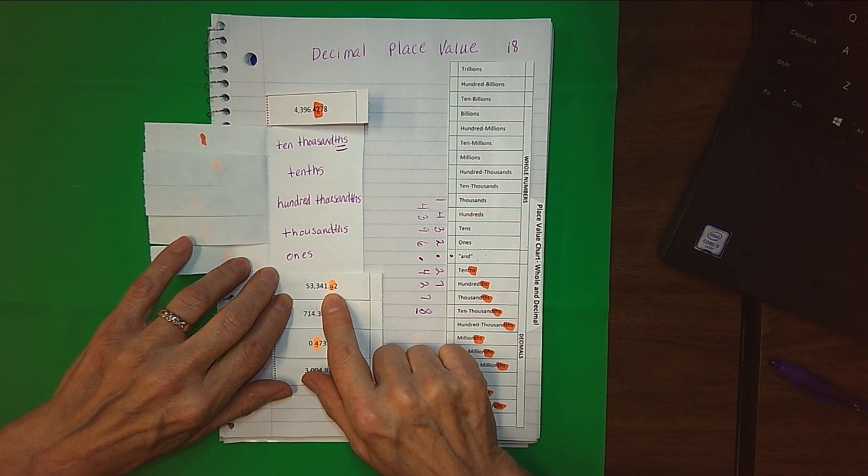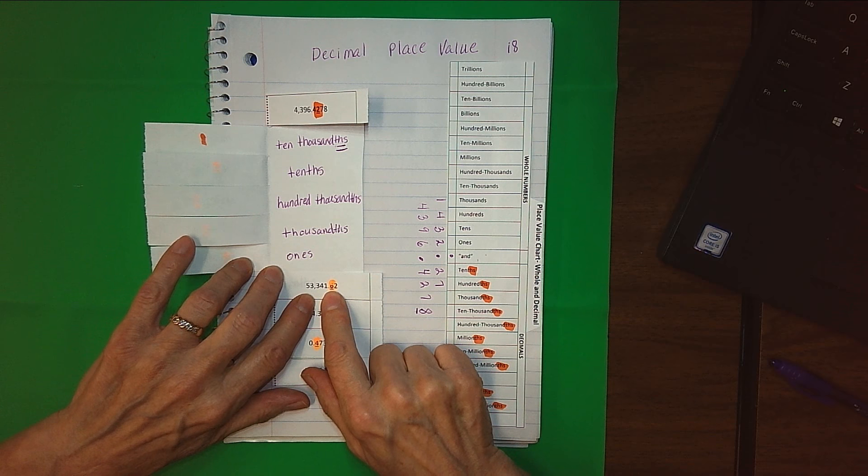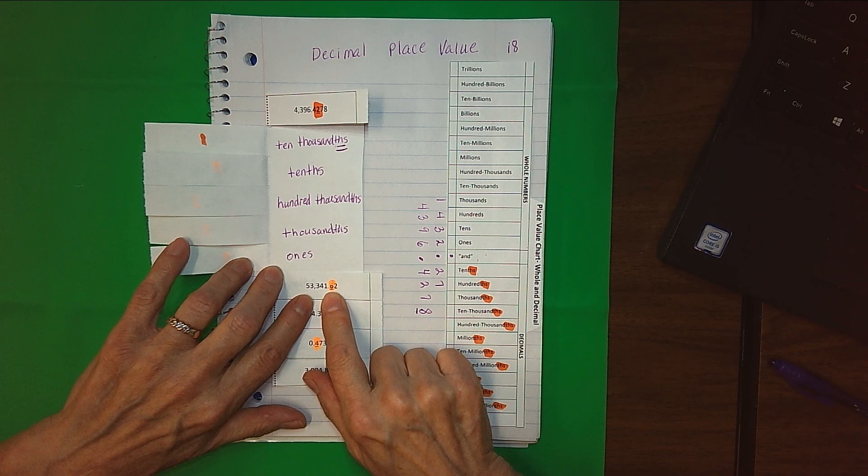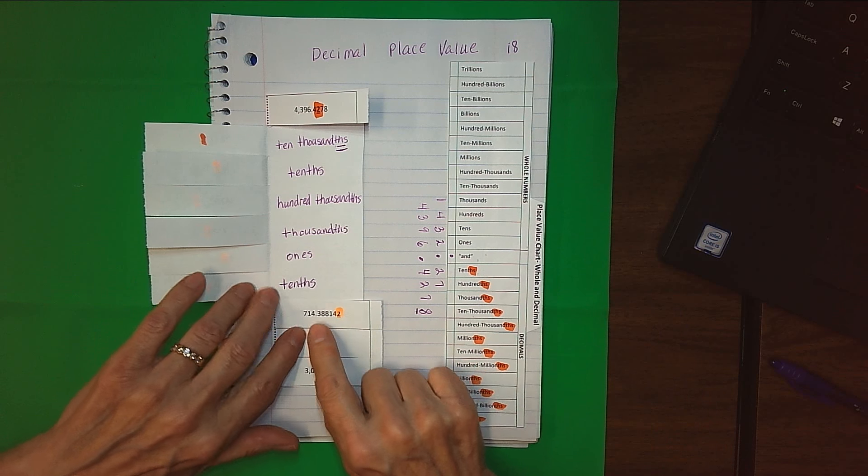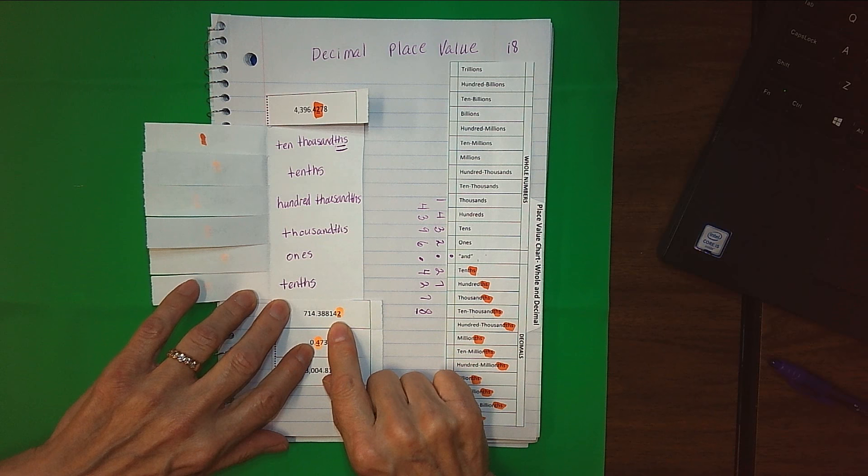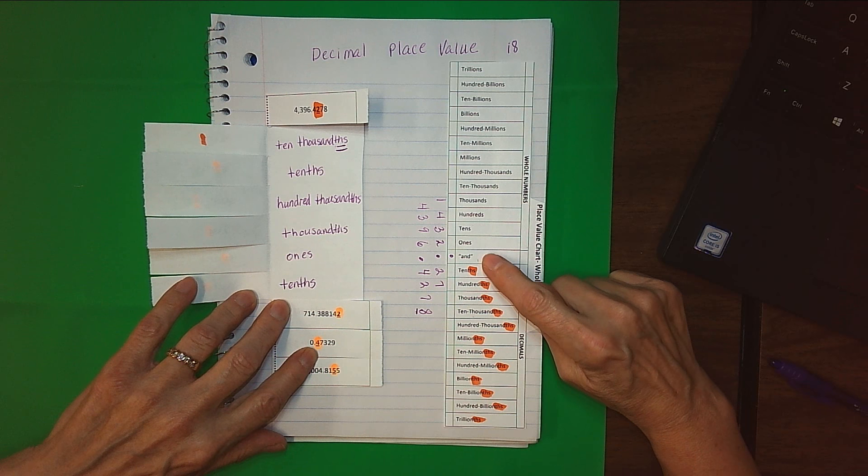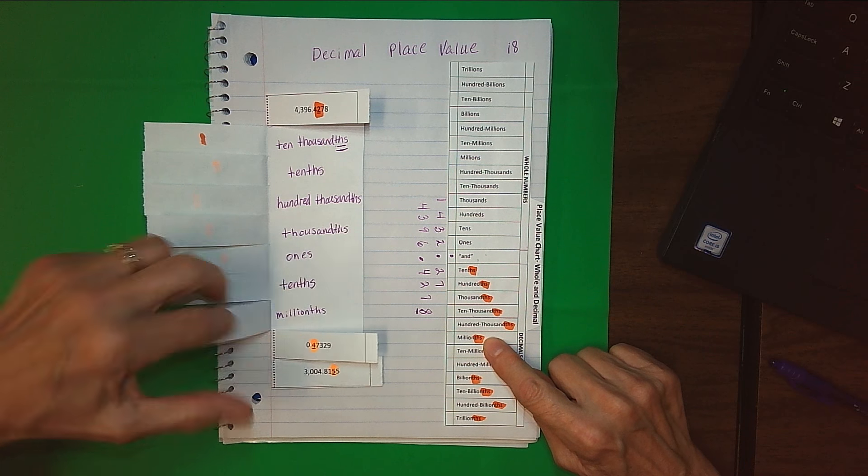Down here, our six is one place away from the decimal point, and so we know that that will be the tenths. Our two is one, two, three, four, five, six places away from the decimal point. So one, two, three, four, five, six. That one's in the millionths place.